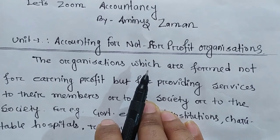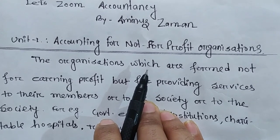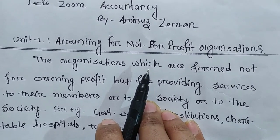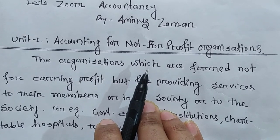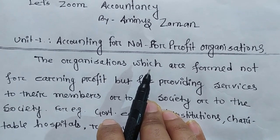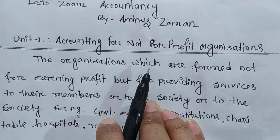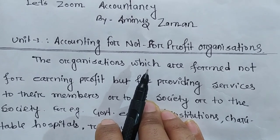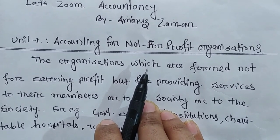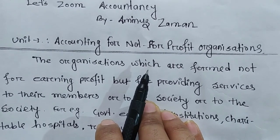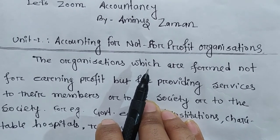Profit Seeking Organizations are those organizations which are established for the purpose of earning profit. For example, private educational institutions are basically established for earning profit. Private nursing homes — these are Profit Seeking Organizations. Companies like Unilever and Jio are also Profit Seeking Organizations.